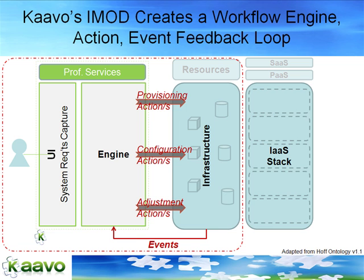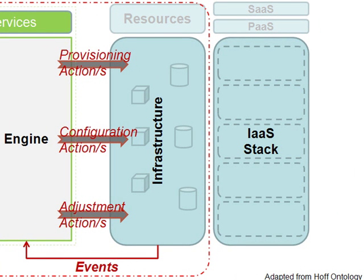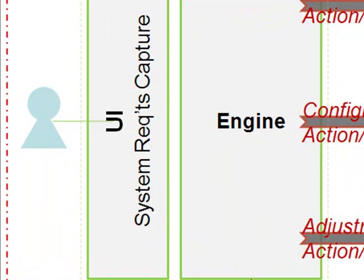Kavo's iMod solution is shown in the red dotted rectangular box. Core Technology is the engine which uses state machines with events-to-actions mappings for each application. The iMod engine interacts with the infrastructure as a service layer, which is the basic building block. We can deliver platform as a service, software as a service, or run custom applications on top of the infrastructure as a service layer.